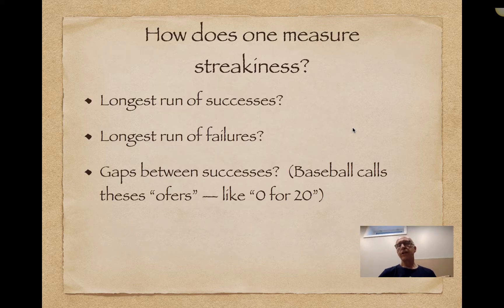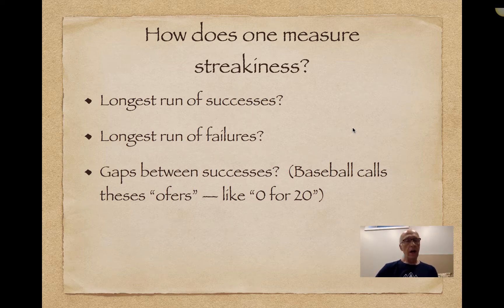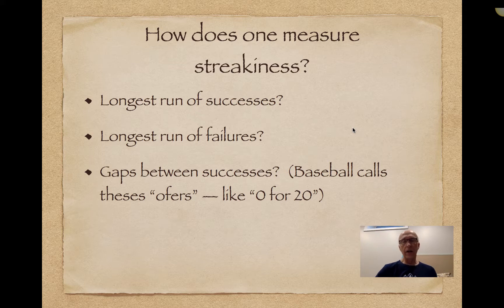There are different ways of measuring streakiness. We can look at the longest run of successes. One thing that baseball does is look at the gaps between consecutive successes. For example, a player who's struggling will be said to be in an 0-for-20 hitting streak, and that's sort of notable.